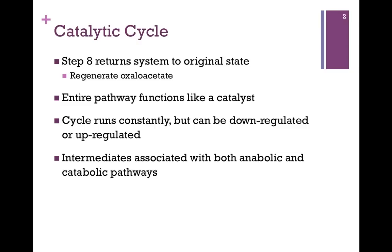The intermediates in the cycle are associated with other pathways, both catabolic and anabolic, and because these intermediates are so key to the needs of the cell, the cycle needs to run continuously — that's why it's cyclic in nature rather than linear. It's as if we had a room in a building that was in constant use, so we'd never completely turn off the lights, but we'd need to adjust the lighting according to the needs of those who are using the room.